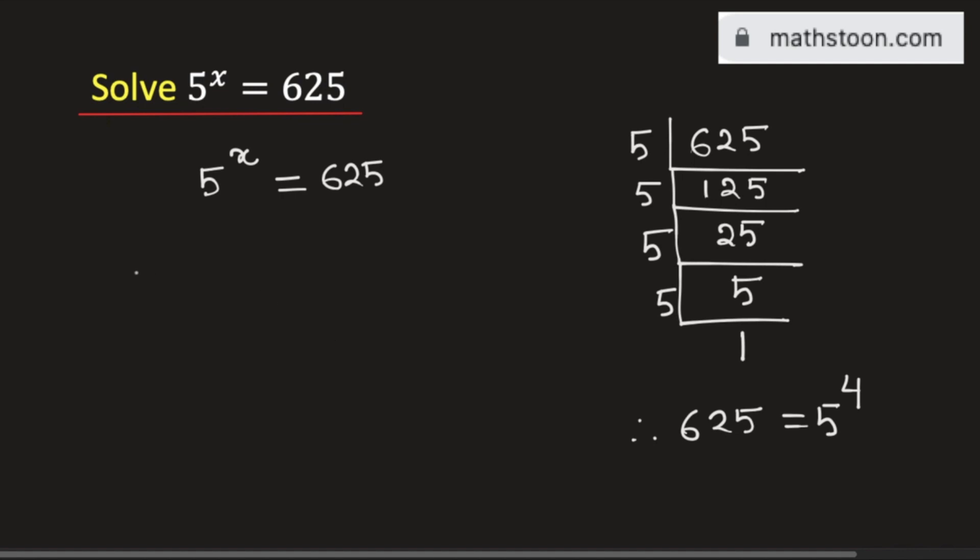Using this fact, the given exponential equation can be written as 5 to the x is equal to 5 to the 4.